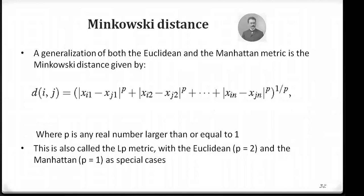The Minkowski formula can also be written as: (|xi1 - xj1|^p + |xi2 - xj2|^p + ... )^(1/p), continuing up to the nth dimension. This is called the Lp metric. When p = 1, it becomes Manhattan distance; when p = 2, it becomes Euclidean distance. The value of p can be any real number.